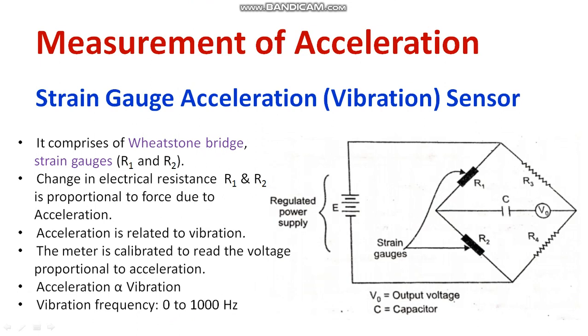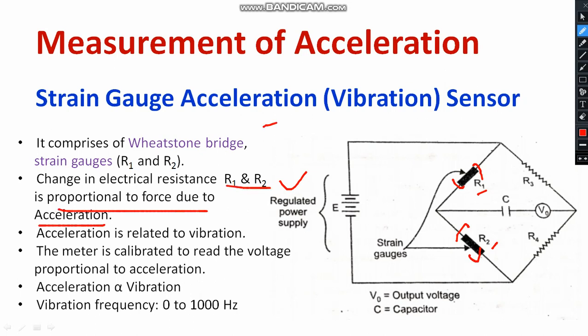The next method is strain gauge acceleration — also known as a vibration sensor. Strain gauges are kept as two arms of the Wheatstone bridge, and the Wheatstone bridge is powered by a regulated DC power supply. With respect to the change in vibration or acceleration, the resistance of R1 and R2 are getting varied. Once the resistances vary, we know that acceleration has occurred and a certain force has been applied on that material. The change in resistance R1 and R2 is proportional to force due to acceleration, and force is directly proportional to acceleration.